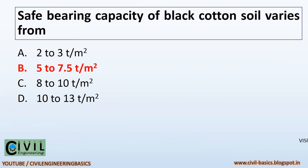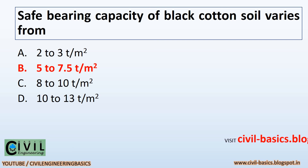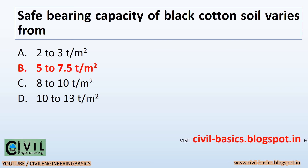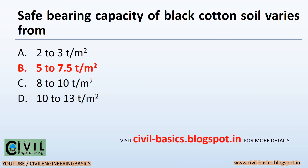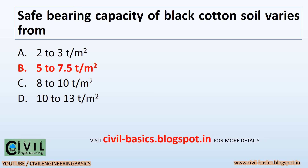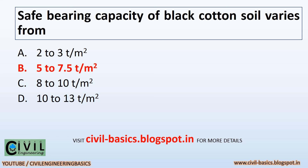Safe bearing capacity of black cotton soil varies from 5 to 7.5 ton per meter square.